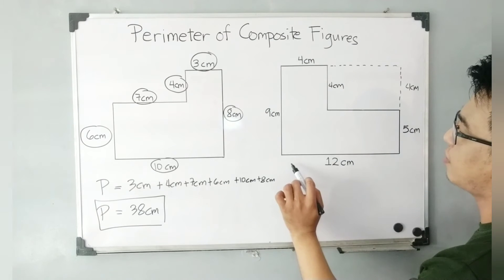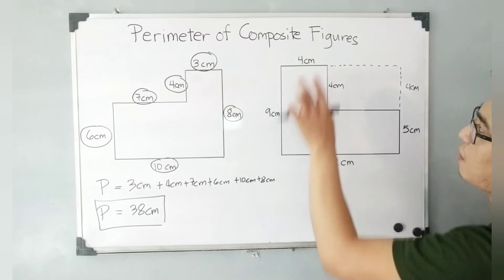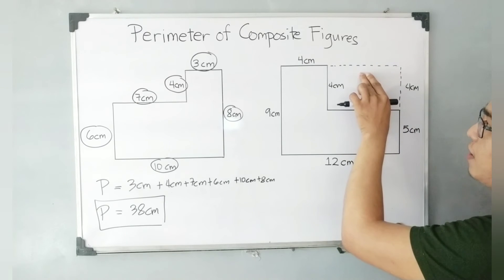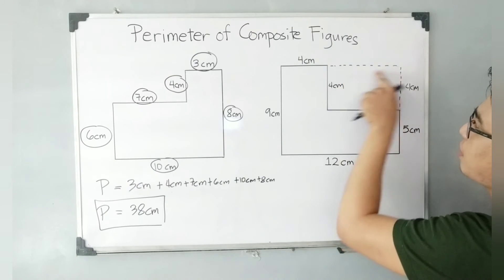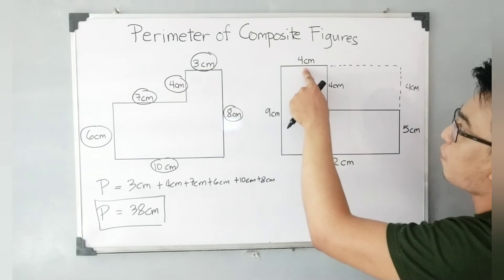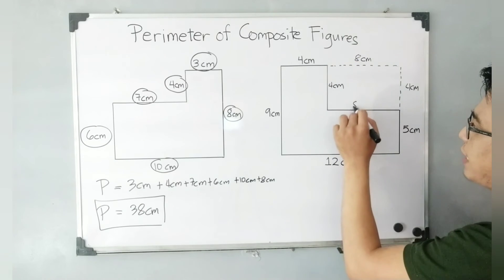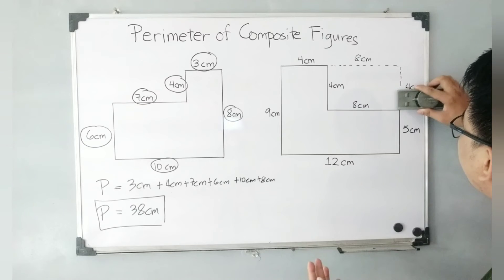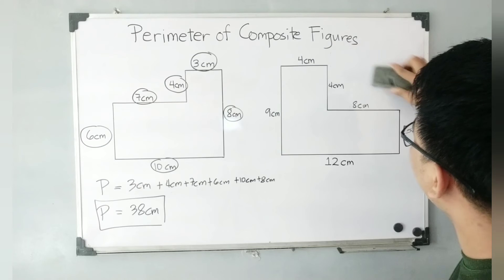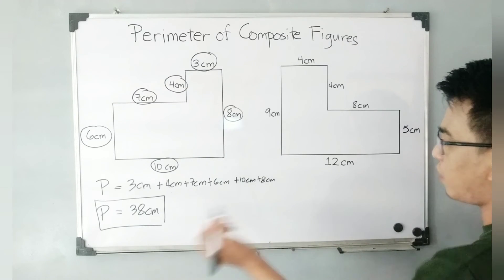As for the other measurement, this side is 12 centimeters. The length of this side is equivalent to the length of this side — which is four centimeters — and this imaginary line. So we can say that the measurement of this side is equivalent to 12 centimeters minus four centimeters, and that is eight centimeters. Therefore this is eight centimeters. So I can erase the imaginary lines, and we can fully solve for the perimeter.